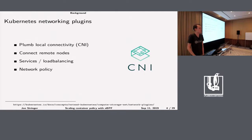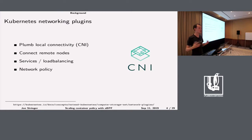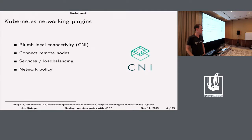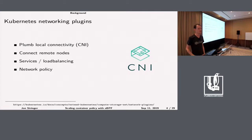What's the responsibility of a Kubernetes network plugin? First, plumbing the local connectivity between a pod on a node and the node itself. Then connecting remote nodes, either via a tunnel mesh or by plugging routes into the Linux kernel to tell one node how to forward traffic to pods on other nodes. There's also services or load balancing, where we configure virtual IP addresses and farm out requests to different backends. More advanced plugins also provide network policy in terms of IP addresses or identities.